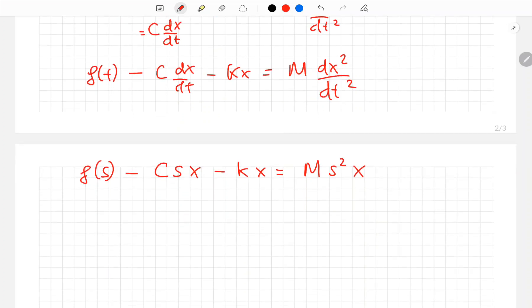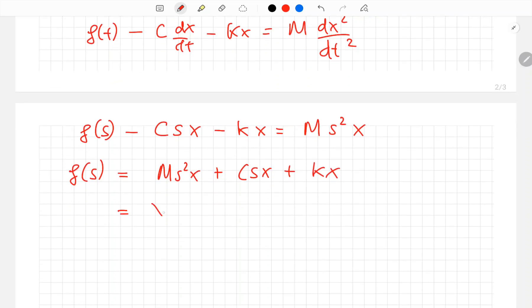Rearrange this equation, we have F of S equals M times S square times X plus C times S times X plus K times X. Factor the X out, we have M times S square plus C times S plus K, everything times X.